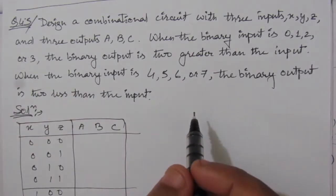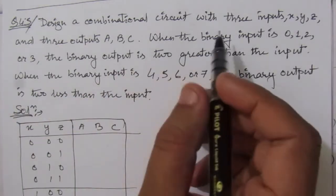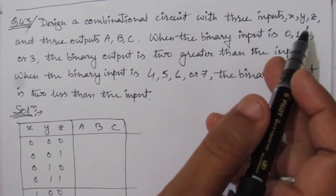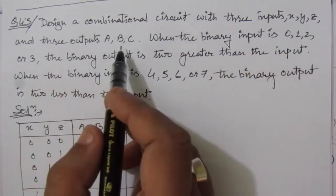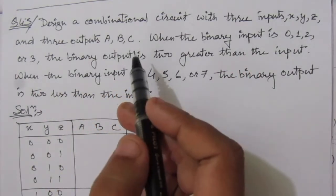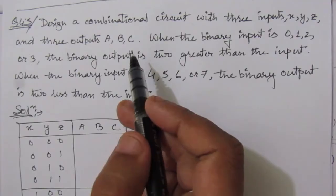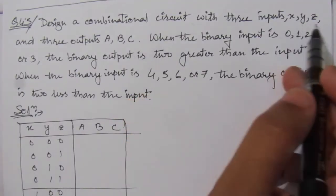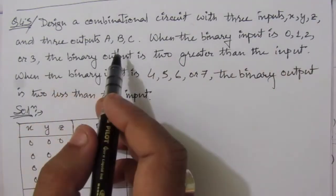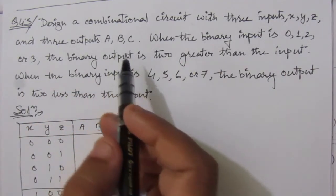The problem is: design a combinational circuit with 3 inputs x, y, z and 3 outputs a, b, and c. That means we have 3 inputs x, y and z and we have to find out the respective a, b, c outputs.